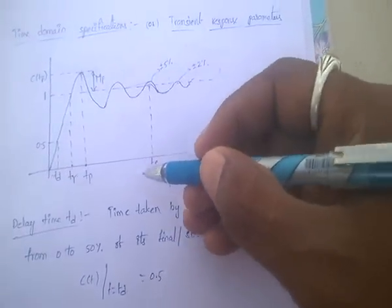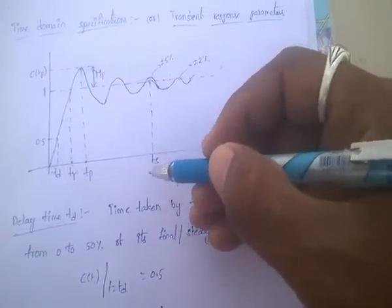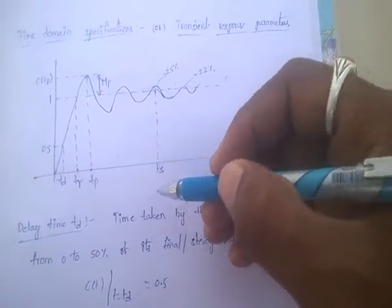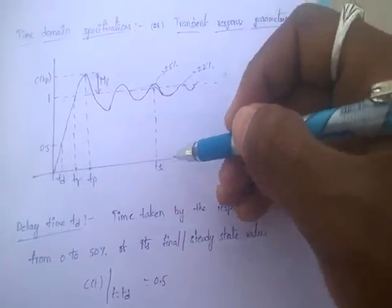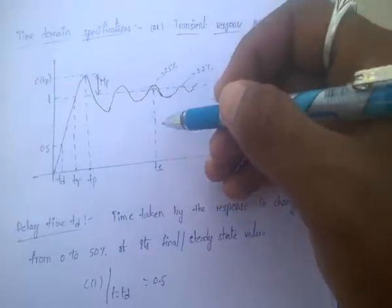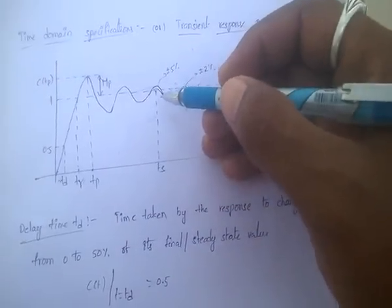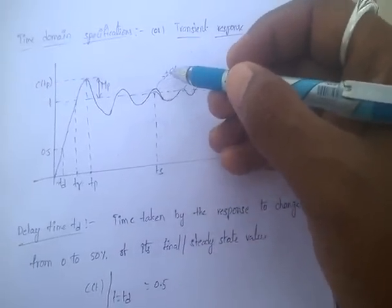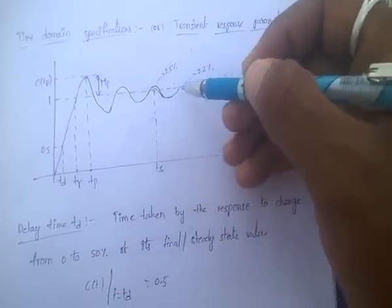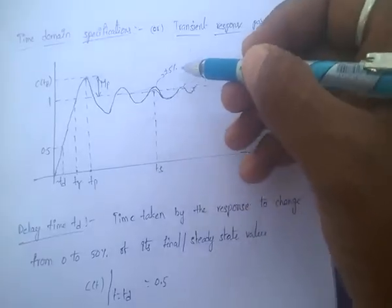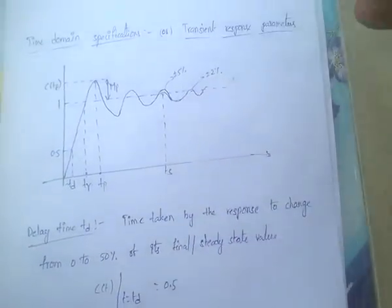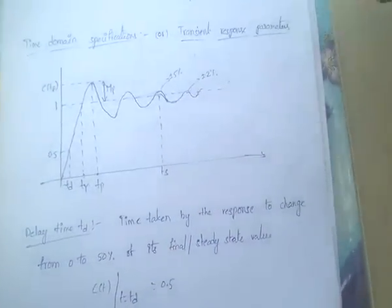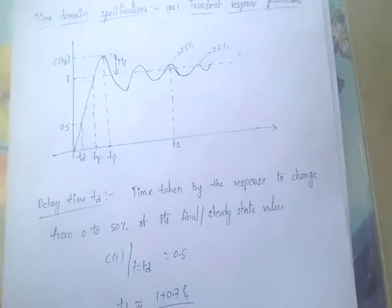TS means settling time — the time taken by the response to reach and remain within the plus or minus 5% or plus or minus 2% tolerance band.